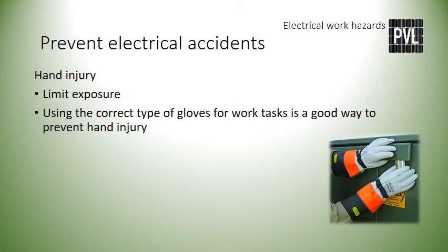Hand injury can be prevented by limiting tasks that put the hands at risk, such as sawing, using sharp or heavy tools, and using powered equipment and tools. Using the correct method for using hand and power tools can also prevent most hand injuries. Using the correct types of gloves for work tasks is an important step — insulating gloves should be worn if there's a chance of electrical shock, and cut-resistant gloves should be used when working with any tool or object that may cause cuts. Proper fit and flexibility of gloves are essential for hand safety — avoid torn or brittle gloves.